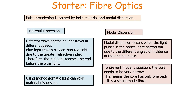To clarify: material dispersion occurs because different wavelengths of white light travel through the fibre optic at different speeds, so they spread out over the journey — this can be prevented by using monochromatic light. Modal dispersion occurs when light pulses take different paths down the fibre optic, travelling different distances, so even though they travel at the same speed they spread out — this is prevented by using a very narrow core so there is only a single mode.